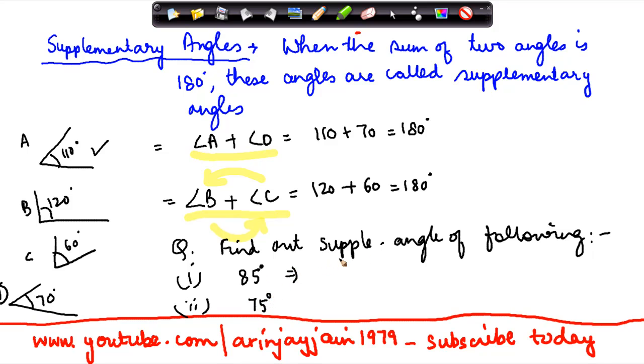We know that the sum of two supplementary angles is equal to 180 degrees. So let's say that is angle X. So 85 plus X degrees is equal to 180 degrees. Therefore, by implication, X is equal to 180 minus 85, which gives me 95 degrees.